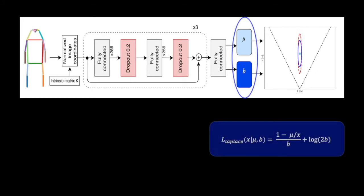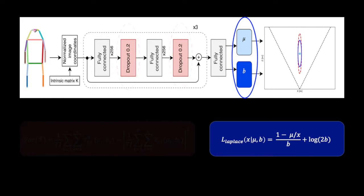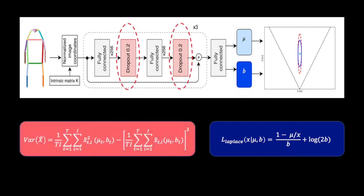Aleatoric uncertainty is obtained through a loss function based on Laplace distribution, which allows obtaining calibrated confidence intervals with no supervision at training time. The combined epistemic and aleatoric uncertainties are captured by sampling from multiple Laplace distributions through several forward passes at test time using Monte Carlo dropout.